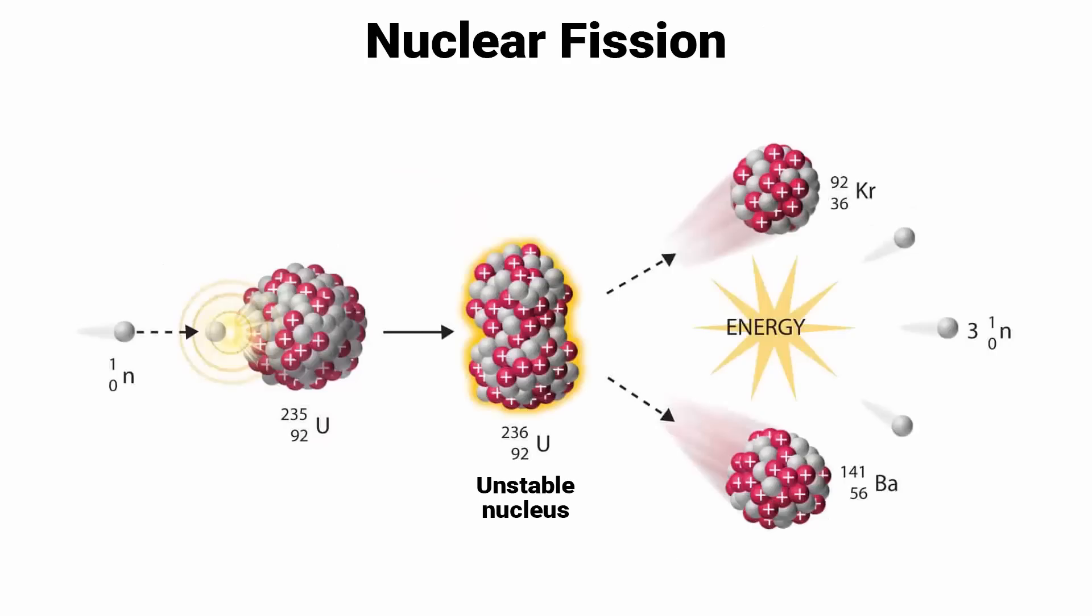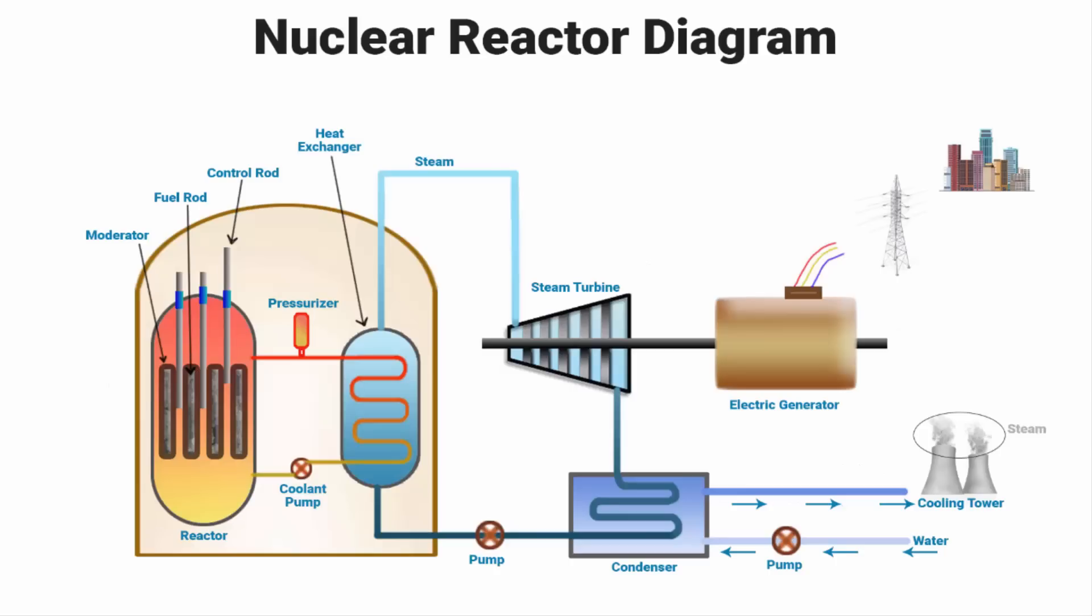As more fission reactions occur, more energy is released in the form of heat. The heat generated by the increased rate of fission reaction is used to produce more steam, which in turn drives the turbines connected to generators to produce more electricity.